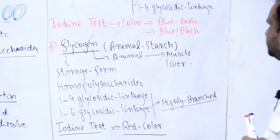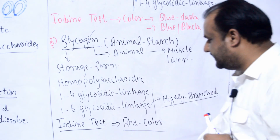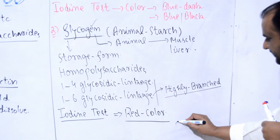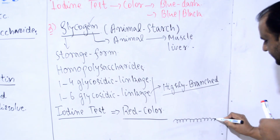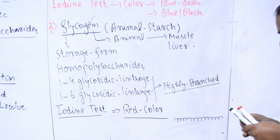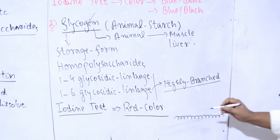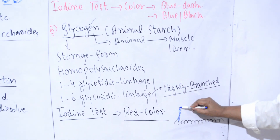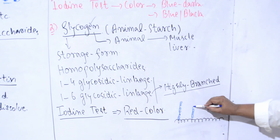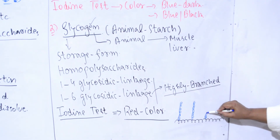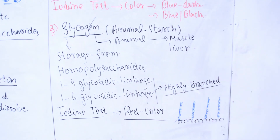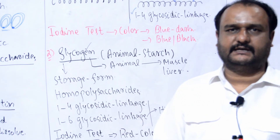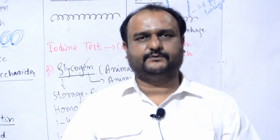Agar main iski structure ko sketch karun student, toh inki structure bhi linear hai. Hundreds of glucose hain aur highly branched hain - main one-six glycosidic bond dikha raha hoon yahan pe. Yeh highly branched hain. Glycogen is present in animals - animal ke muscle mein, animal ke liver mein store hoti hai. Next hum log study karenge insha'allah cellulose ko. Thank you very much.